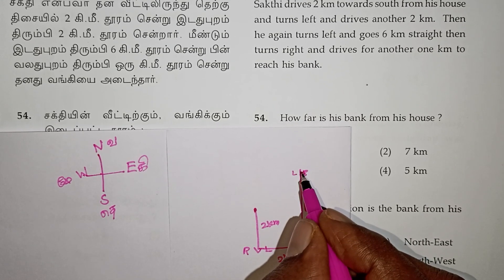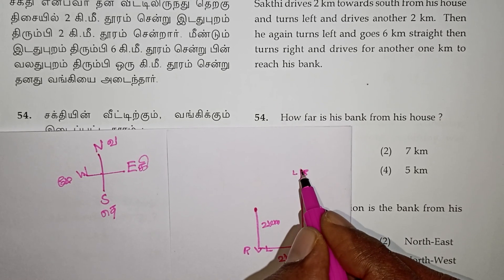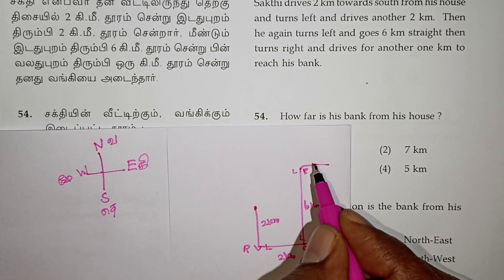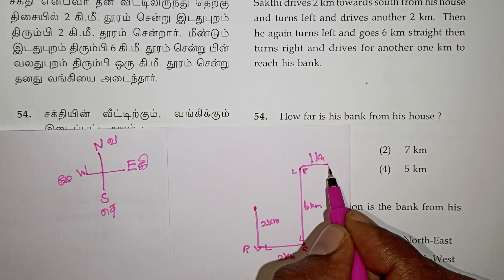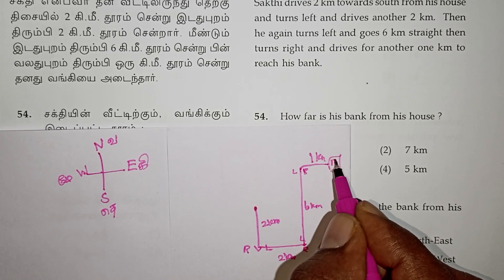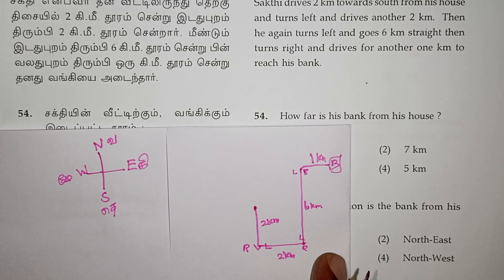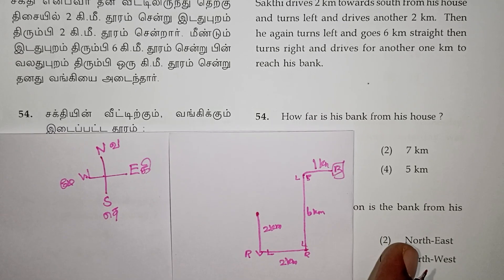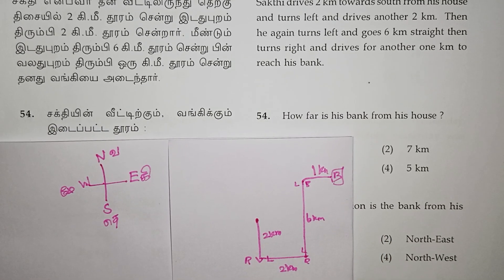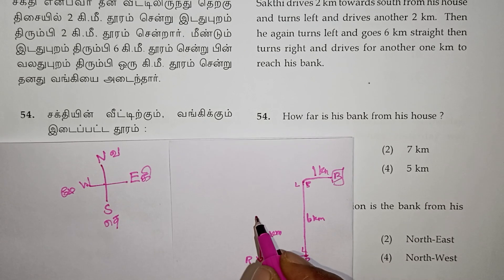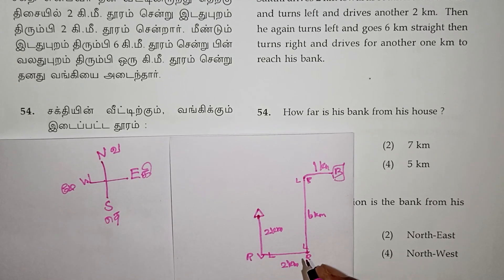Here we go to the right side. We walk from the right side to the left side, from the bank to the right side. We will try to find the total distance to travel.